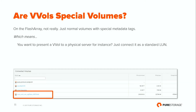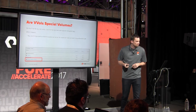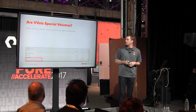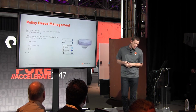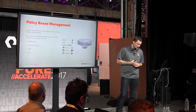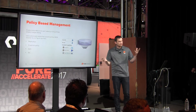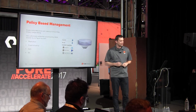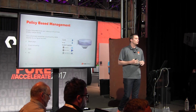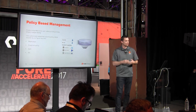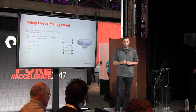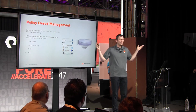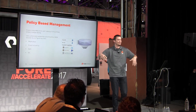Regarding QoS — the initial version of our QoS is enabled array-wide, a noisy neighbor kind of concept. If it's enabled on the array, we'll throttle certain workloads. The next version of our QoS will be more focused on individual volumes. So yes, a little bit of teasing — that's the point of this whole thing.